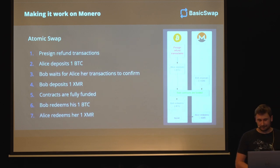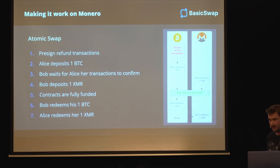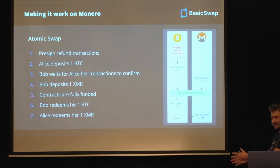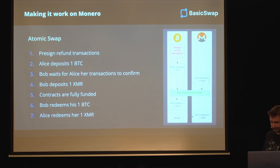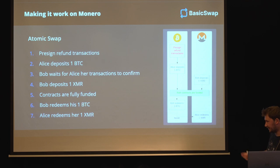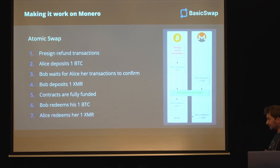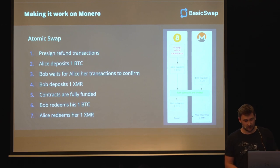So how does an atomic swap work on Monero? The first thing is that they pre-signed refund transactions, which is basically the equivalent of signing your divorce papers before you get married. You will find a way to amicably split away in case one of the two people does something wrong or just disappears. And this only happens for Bitcoin. Alice deposits her one Bitcoin after signing her end of the refund transactions. Then Bob basically waits for that transaction to confirm, and then only then will he deposit his Monero. Then we consider both contracts fully funded and they can start redeeming it.